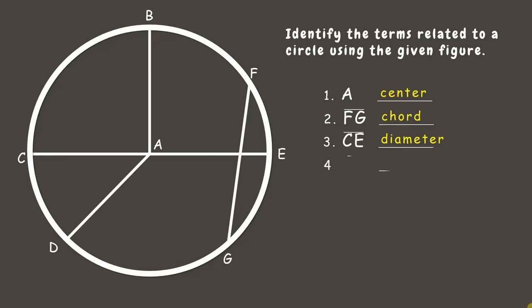Now we have line segment AD, which starts from the center point A to a point on the circle. So clearly, it is a radius.